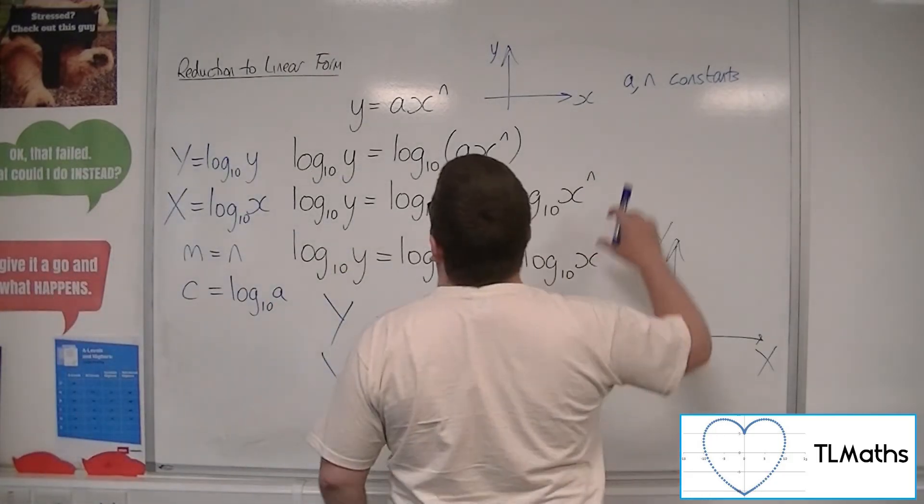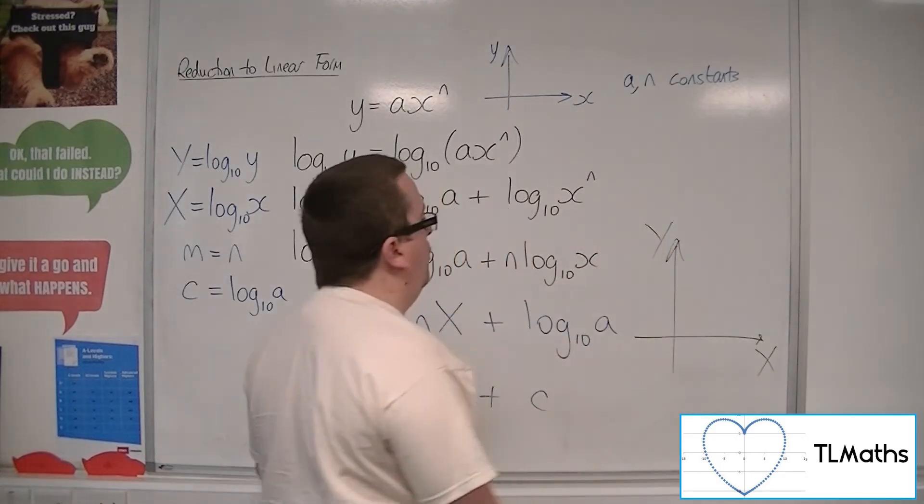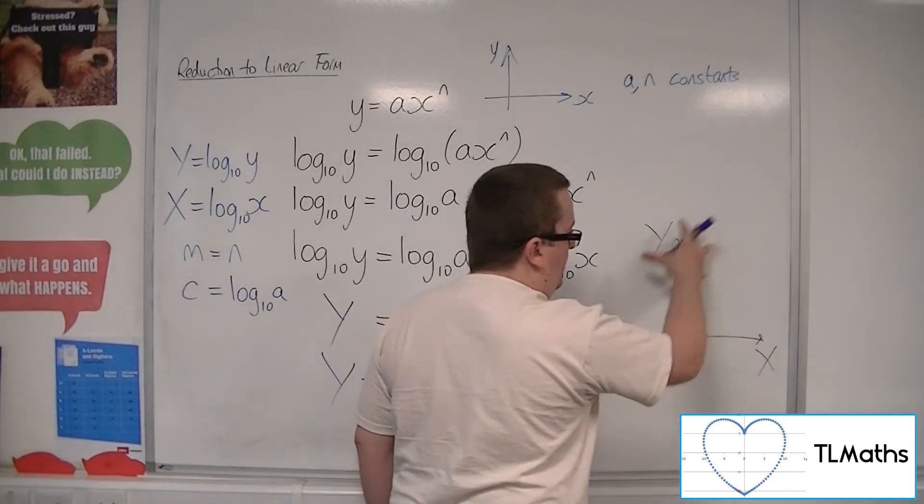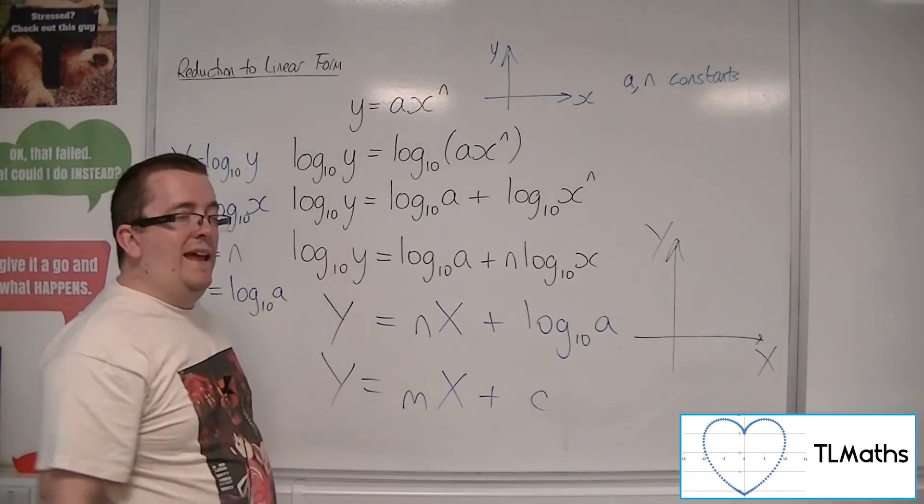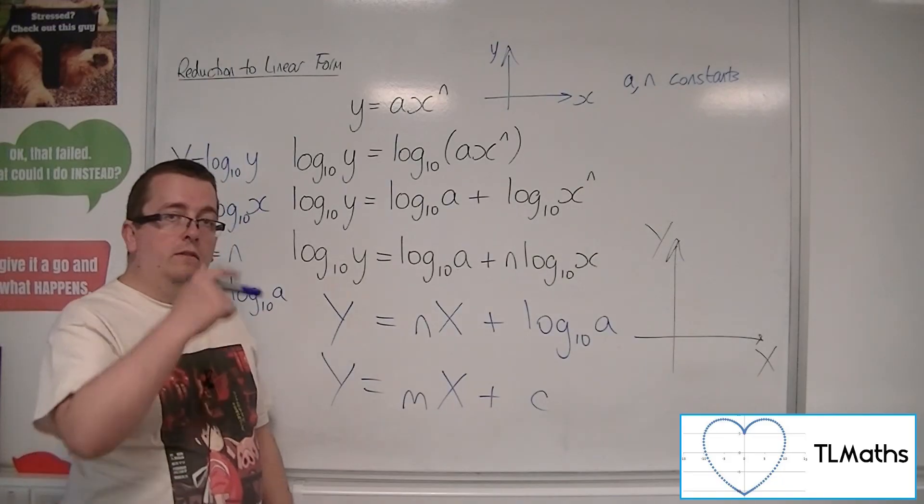So, you would have your x's, y's, log 10x's, log 10y's. And if I plotted log 10x against log 10y on this graph, if it came across as a straight line, I could then estimate a value for m and a value for c. So, that is how we go through this process of reducing.